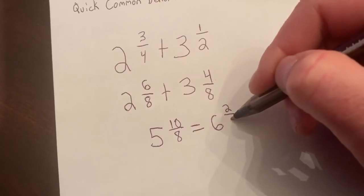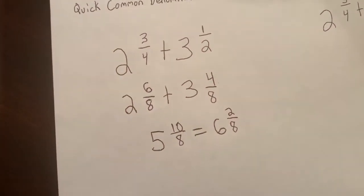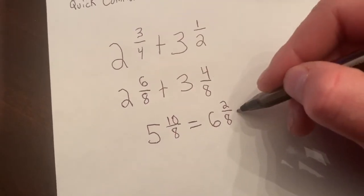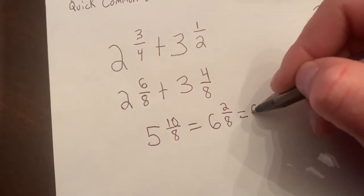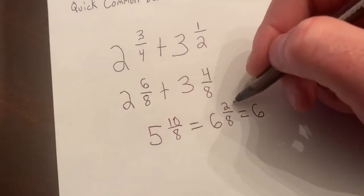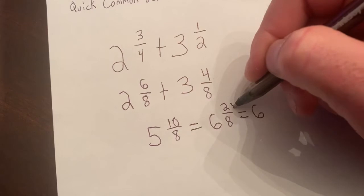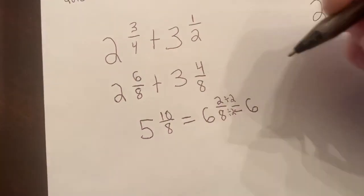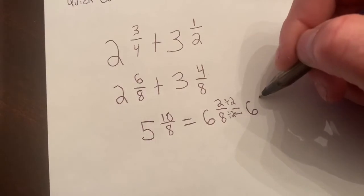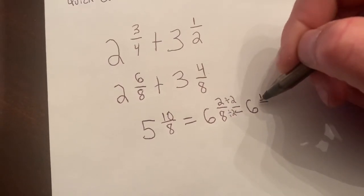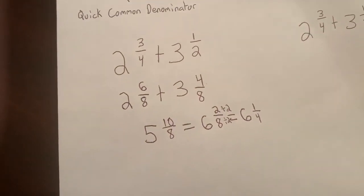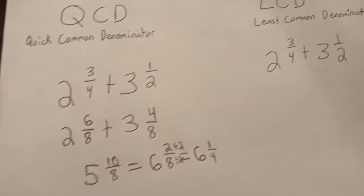And then I can simplify. I'm going to copy the 6 down, but then I can simplify 2 eighths by dividing by 2 over 2. 2 divided by 2 is 1, 8 divided by 2 is 4. So this gives us 6 and 1 fourth. So let's come over here and look at it with LCD now.